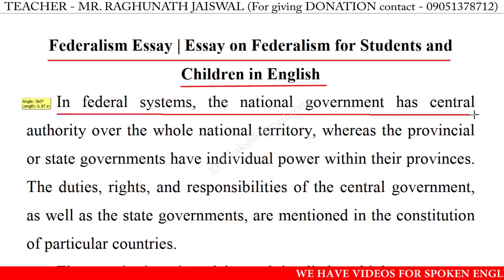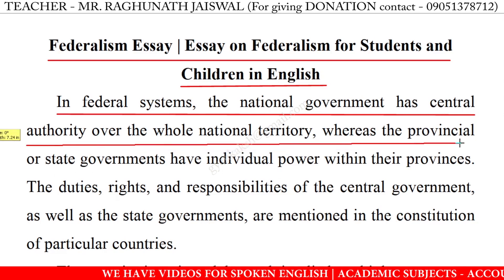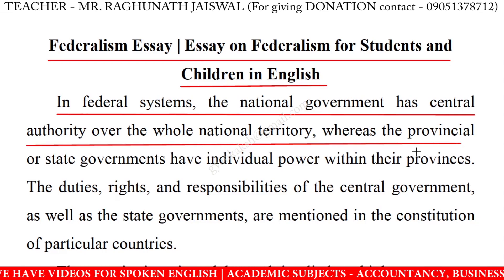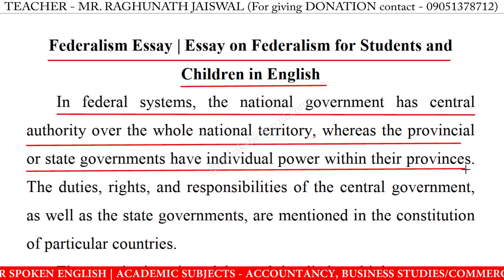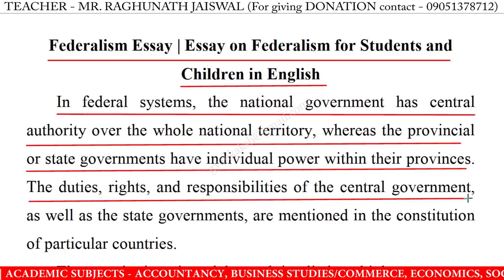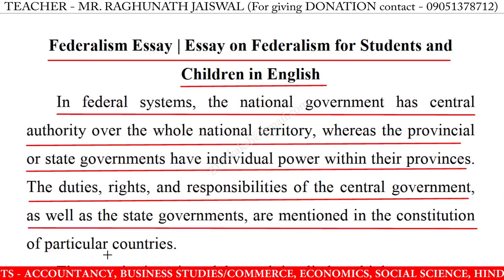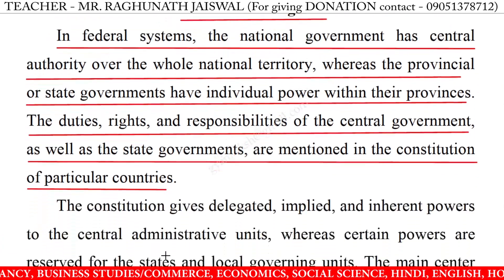In federal systems, the national government has central authority over the whole national territory, whereas the provincial or state governments have individual power within their provinces. The duties, rights and responsibilities of the central government as well as the state governments are mentioned in the constitution of particular countries.